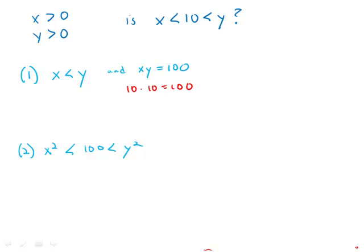And so it means if we make the two numbers unequal, then we have to make one smaller than 10 and the other bigger than 10. In fact, whatever ratio the first one is divided by, the second one has to be multiplied by so that the product stays the same.